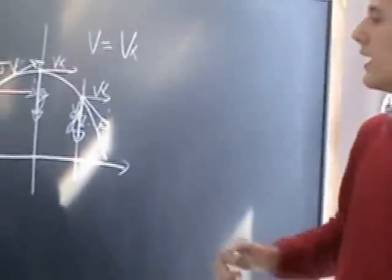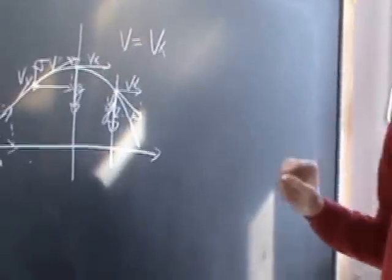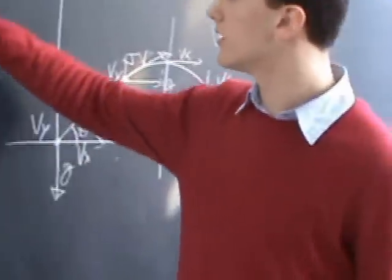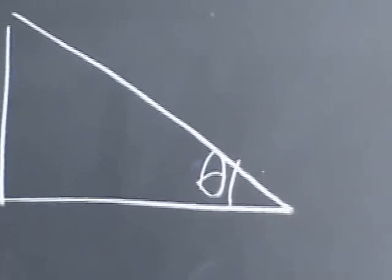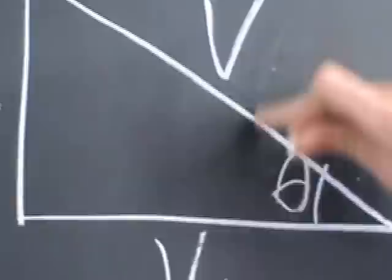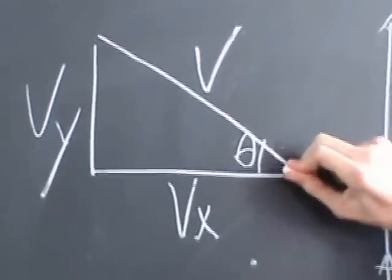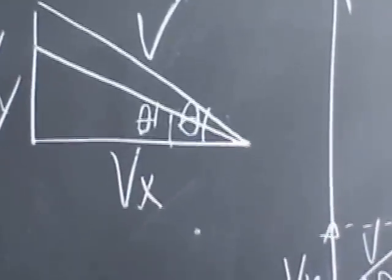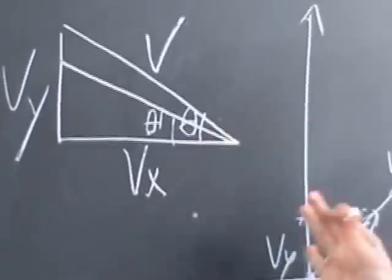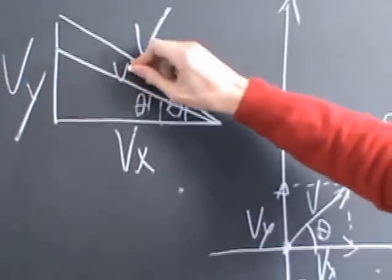But why does velocity change its direction and its magnitude? In this point, we can consider this right-angle triangle. This is theta, this is vx, this is vy, and this is v. If we change the angle — for example, if it reduces to theta prime — using the Pythagorean theorem, we can see that v prime is less than v.